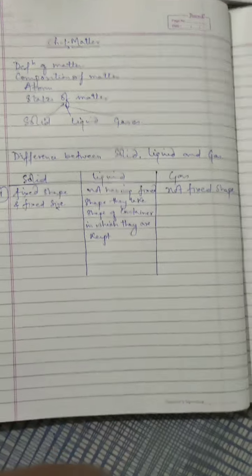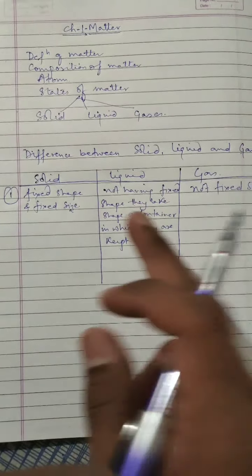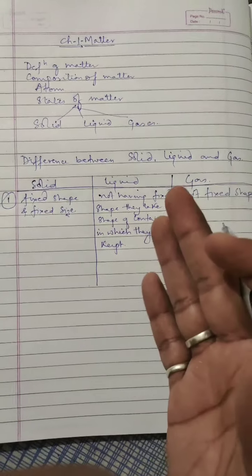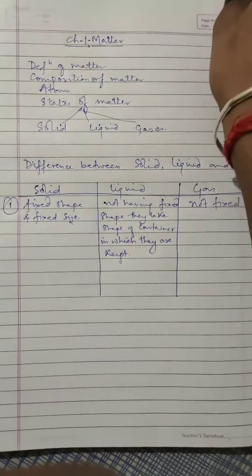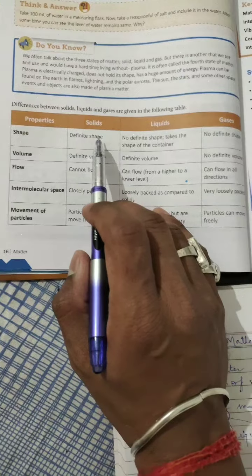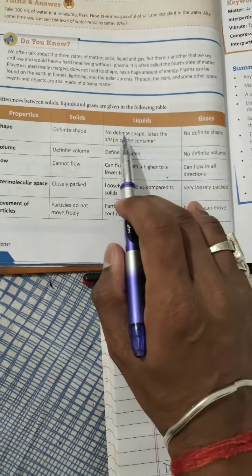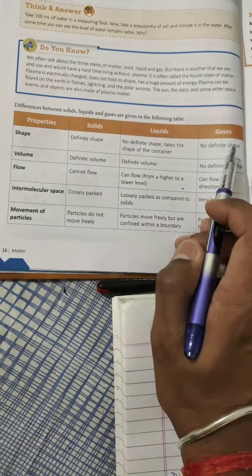The first criteria of making difference between these three was shape. Solid has fixed shape, liquid no fixed shape, gases no fixed shape. This is also given in your book on page number 16. See, according to shape: solid has definite shape, liquid no definite shape, it takes the shape of container, gases no definite shape.